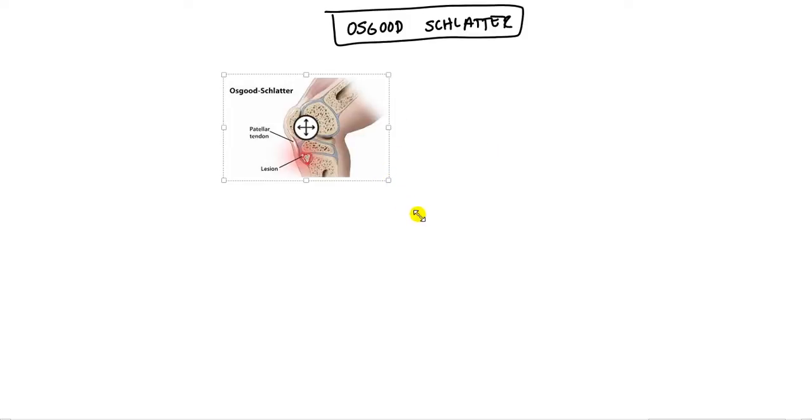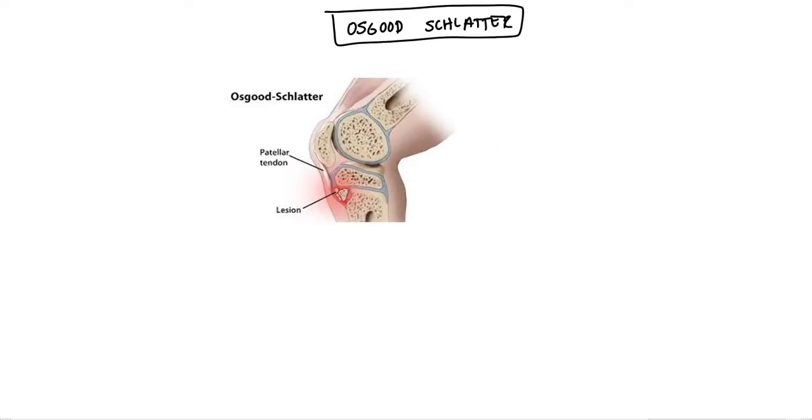After this we can talk about another condition called Osgood-Schlatter. What's the pathogenesis? Basically chronic overuse as a child. The patient, generally nine to 14 years old, with chronic overuse starts to damage the apophysis of the tibial bone. This is the tibial tuberosity where the patellar ligament is attached.